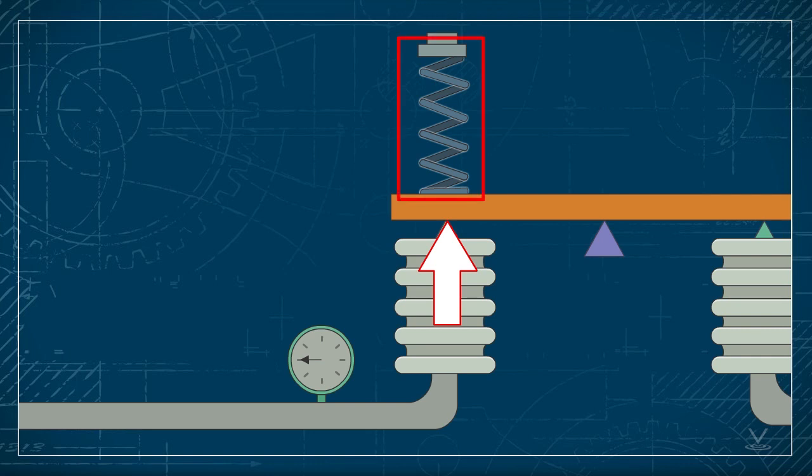The setpoint for this controller is established by the tension of a spring, which opposes the force of the input bellows. When the process variable is at setpoint, the two forces are balanced and the beam is stationary.